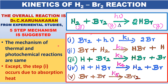The interesting thing is that the mechanism of the thermal reaction as well as the photochemical reaction are the same, except that in the photochemical reaction, light is absorbed to dissociate bromine into bromine atoms, whereas in the thermal reaction, heat is absorbed to dissociate Br₂ into bromine atoms. Therefore, the mechanisms of both thermal and photochemical reactions are the same, and so the rate law is also the same.